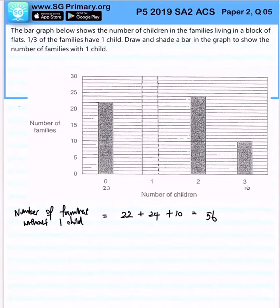We know that one third have one child, so this 56 represents two thirds of the families. The families with one child would be 56 divided by 2, which equals 28. So one unit represents 28 families.